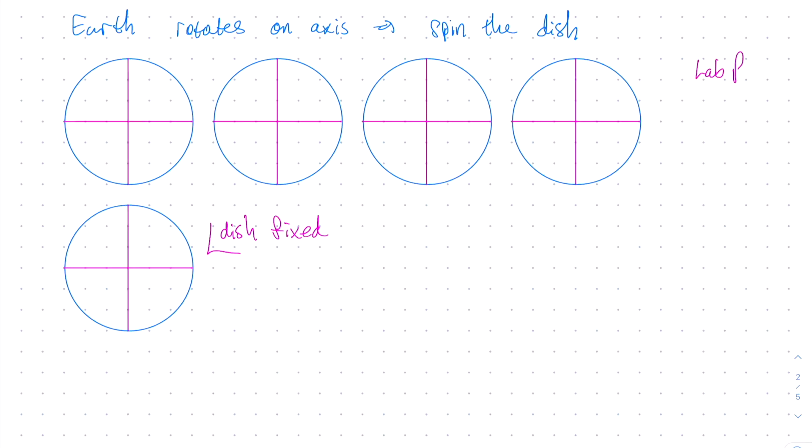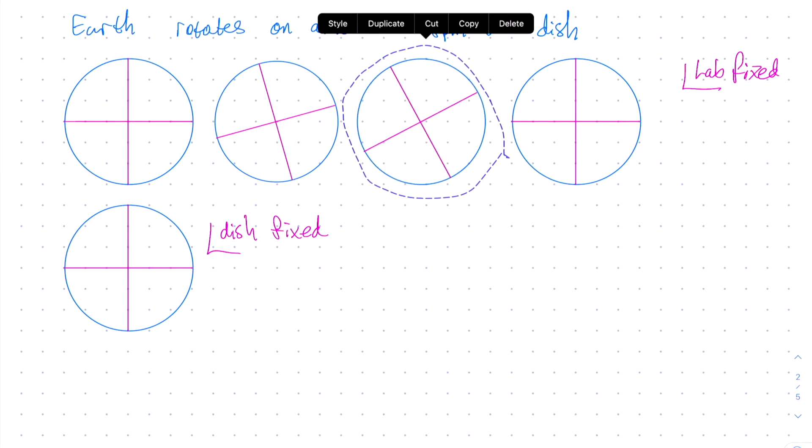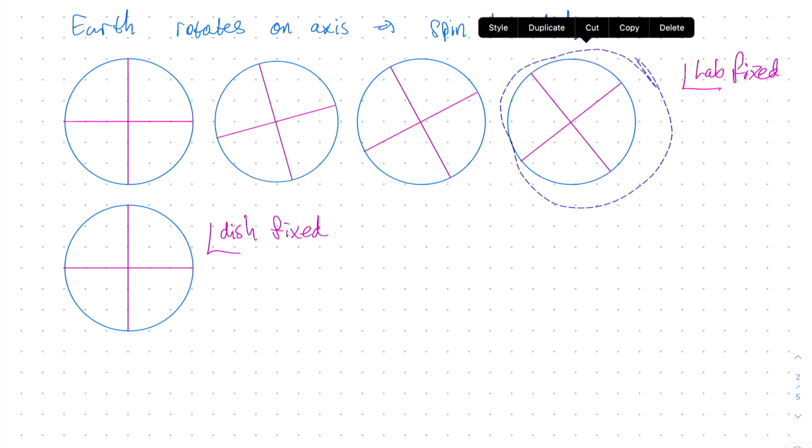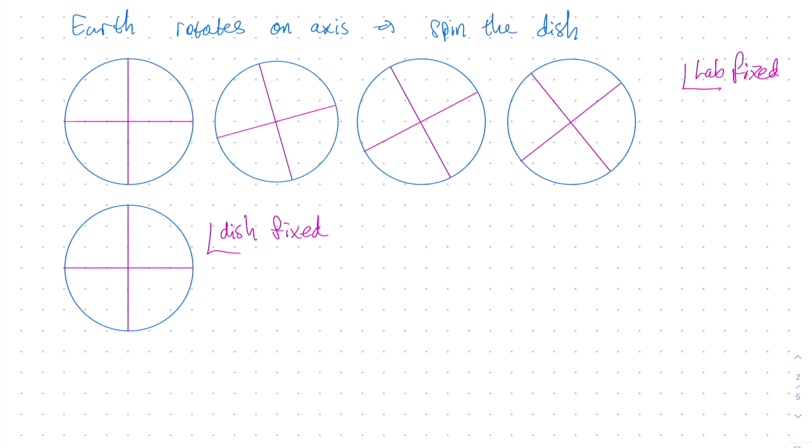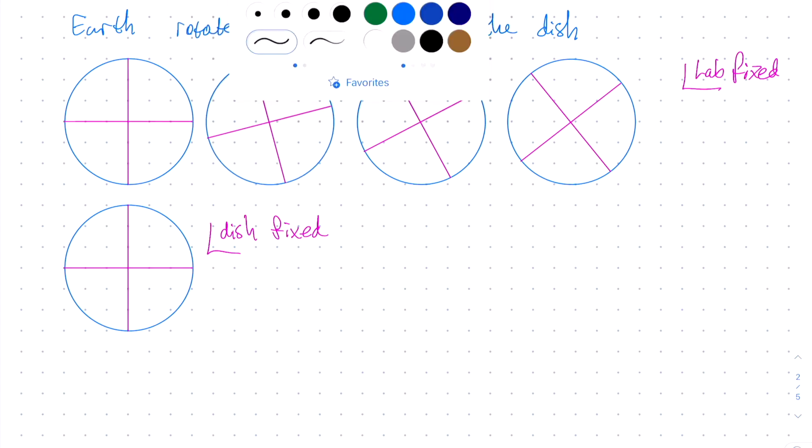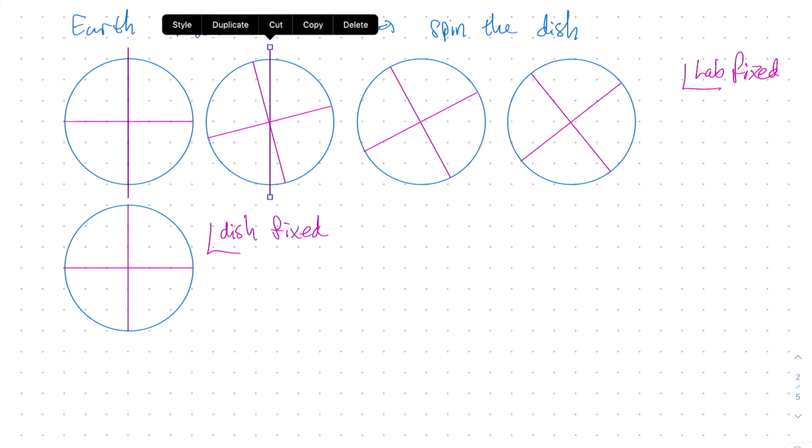The four pictures at the top indicate four different snapshots of what the disk looks like in the laboratory frame. The picture in the bottom is going to be the picture of the disk in the dish fixed frame, that is, in the rotating frame. The pictures in the top row are in the lab frame at different times, so let me adjust how much they are tilted to indicate that the dish is rotating. The pink lines are drawn to see how far the dish has rotated. Now I'm just making sure all the images of the dish are of the same size.